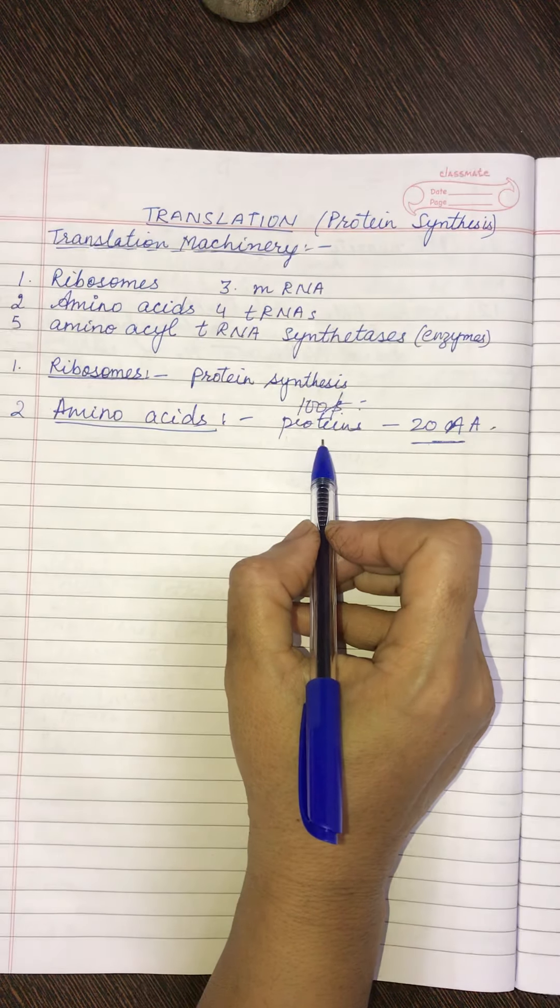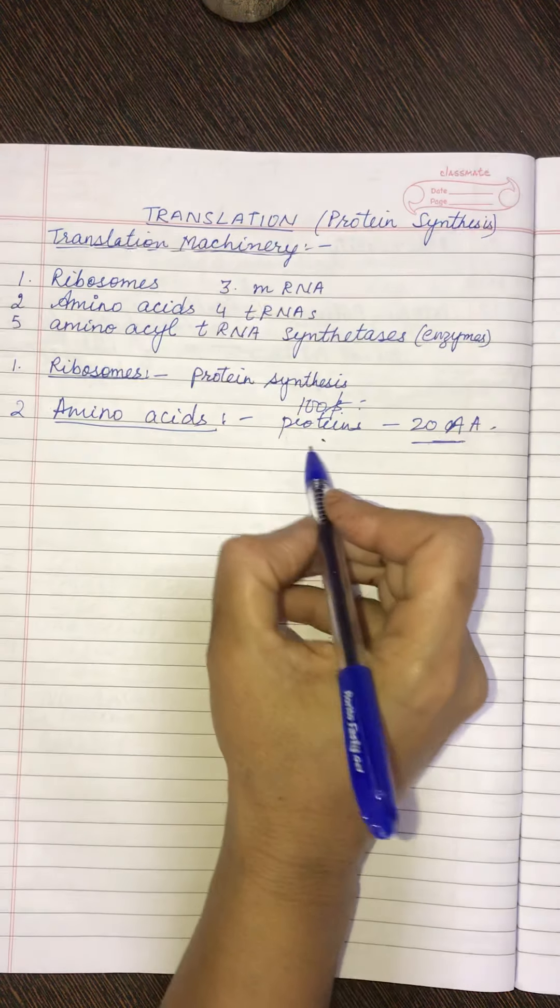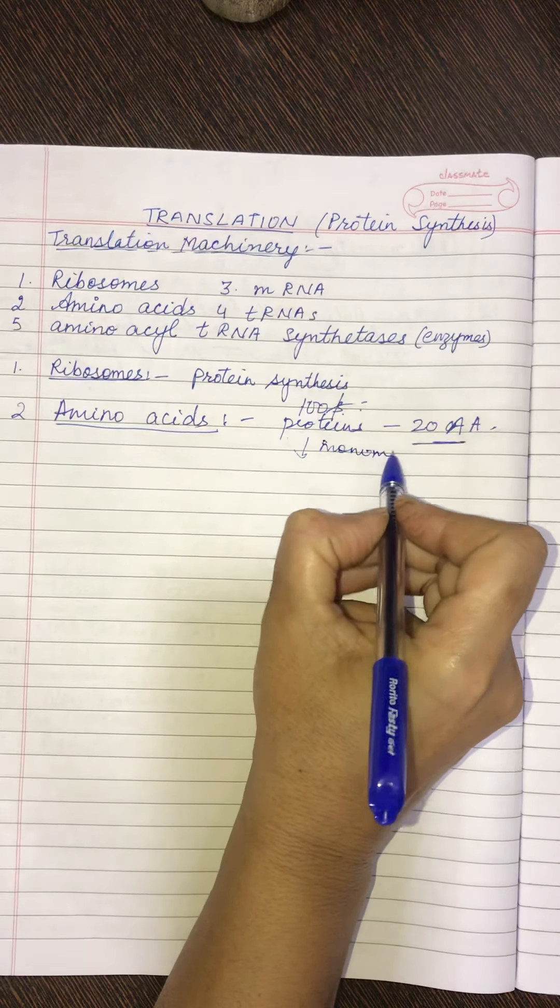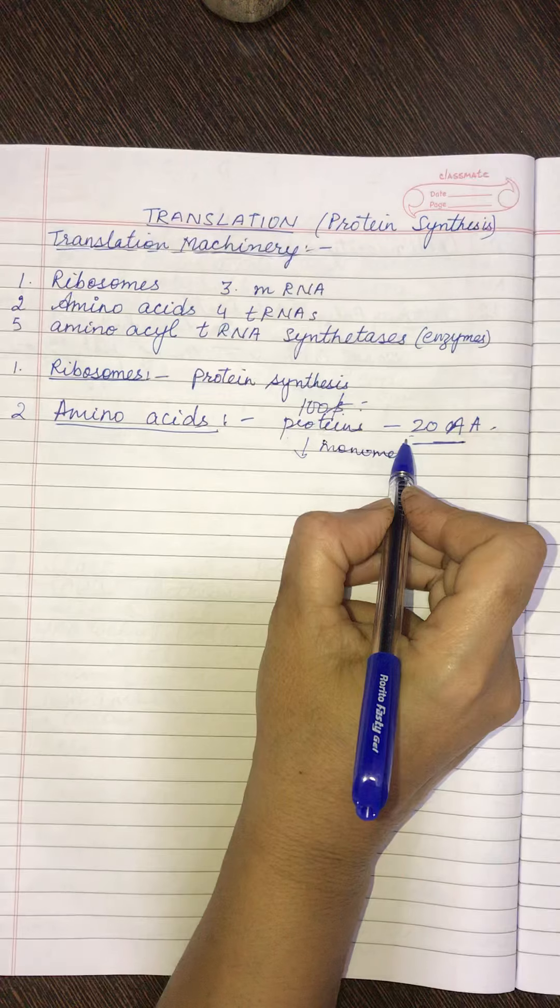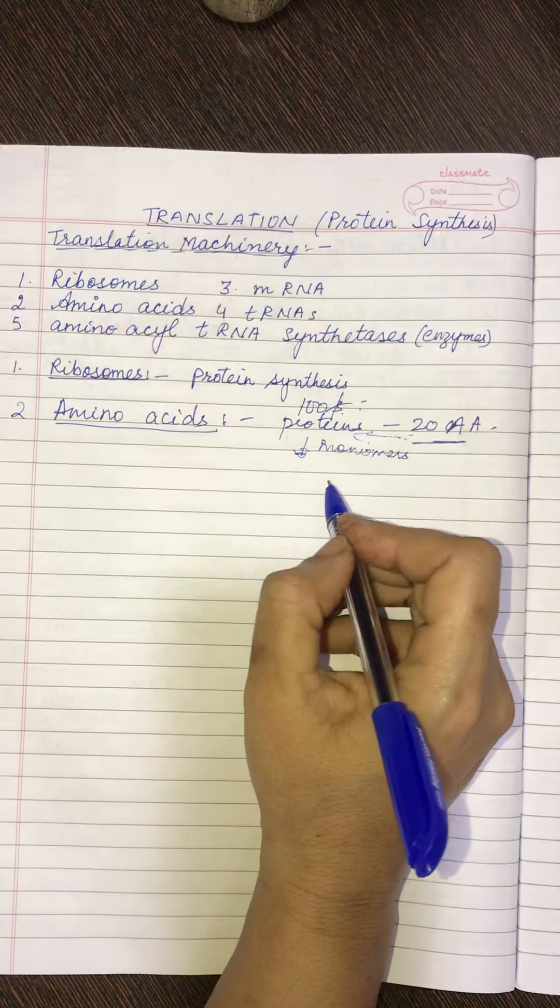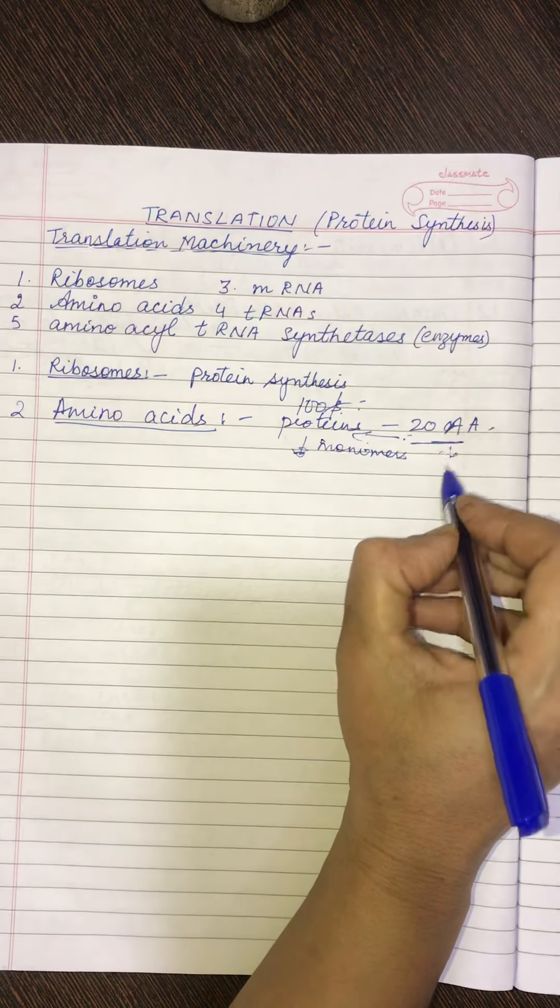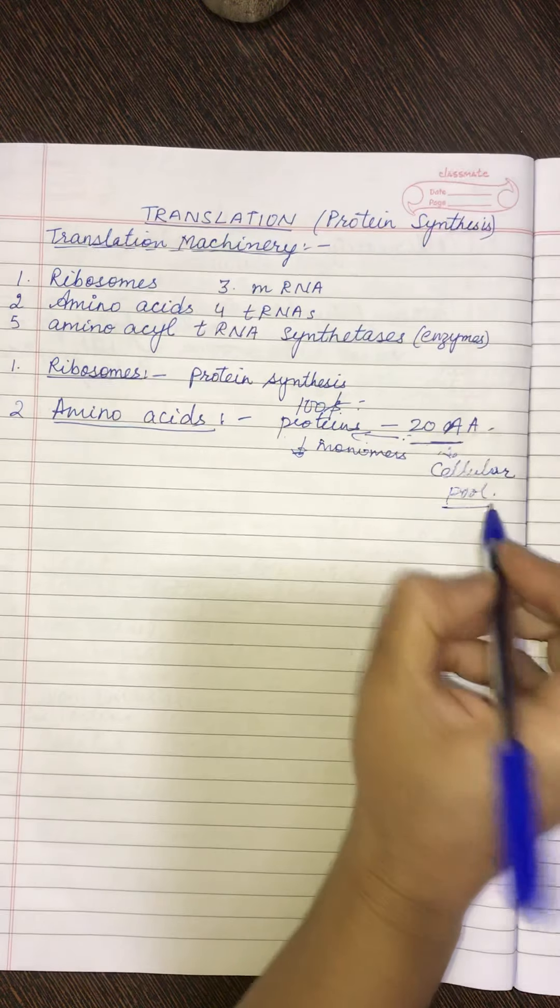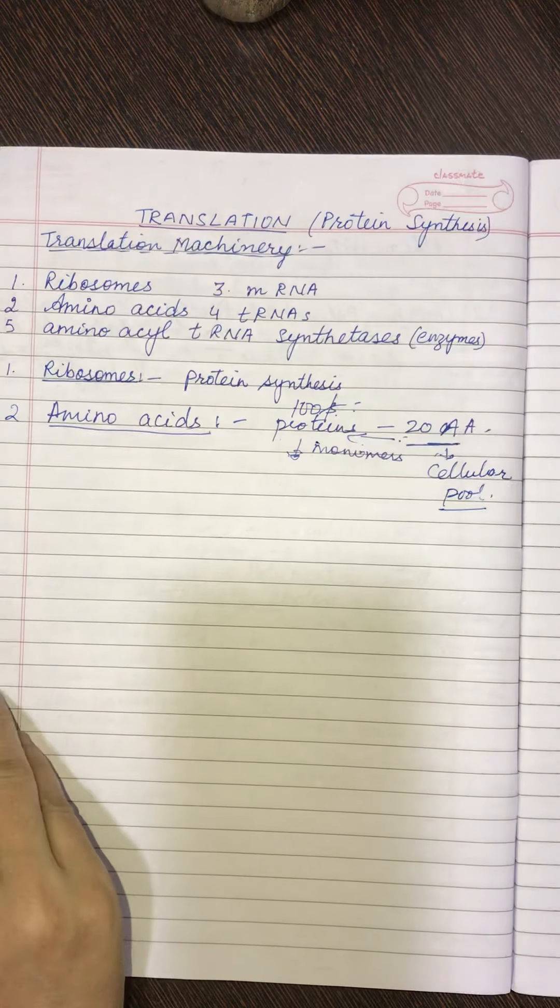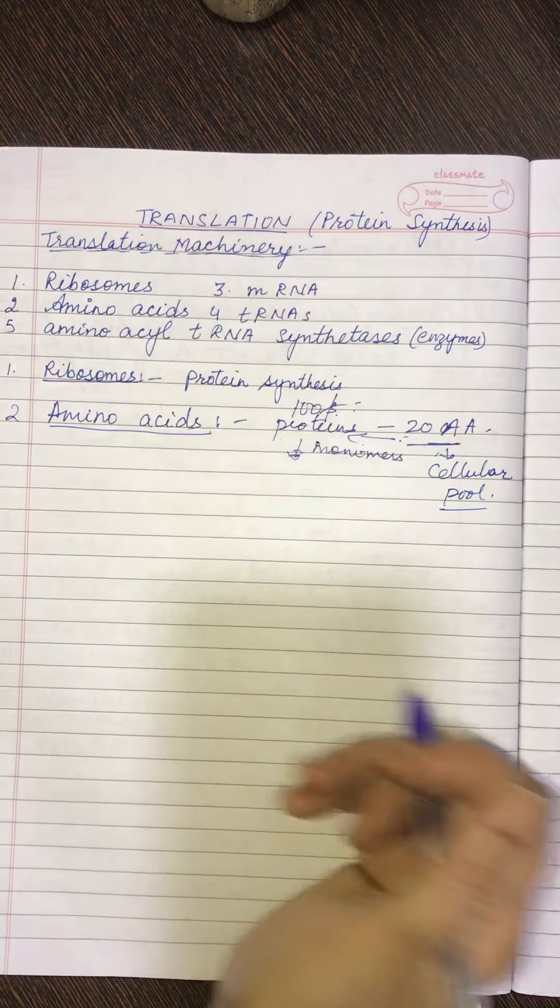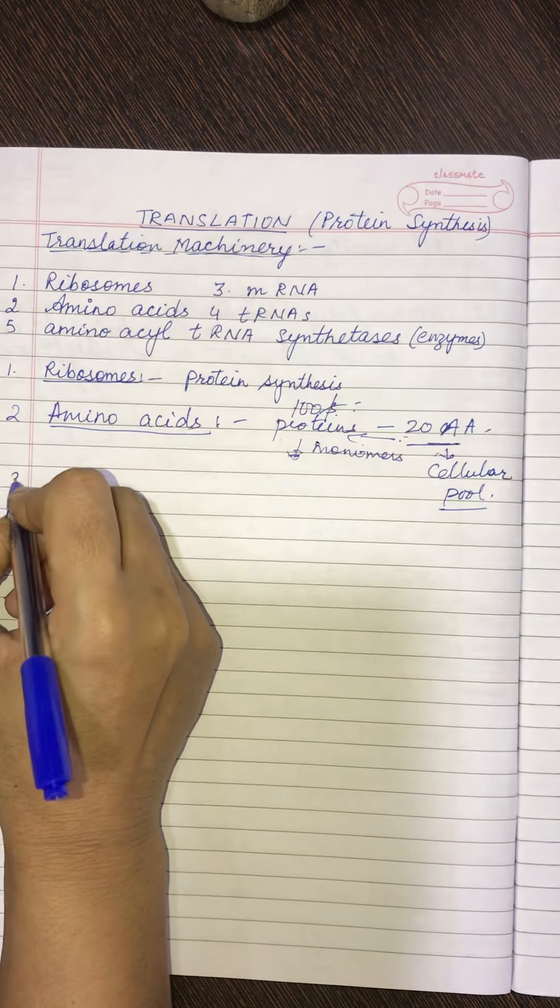So these amino acids, they are the building blocks or the monomers of proteins. We call them the monomers, amino acids. So monomers of the proteins. So all these amino acids, they occur in the cellular pool. So 20 amino acids, I have given you the list of the 20 amino acids. I hope you have learnt it very well. This is very, very essential.